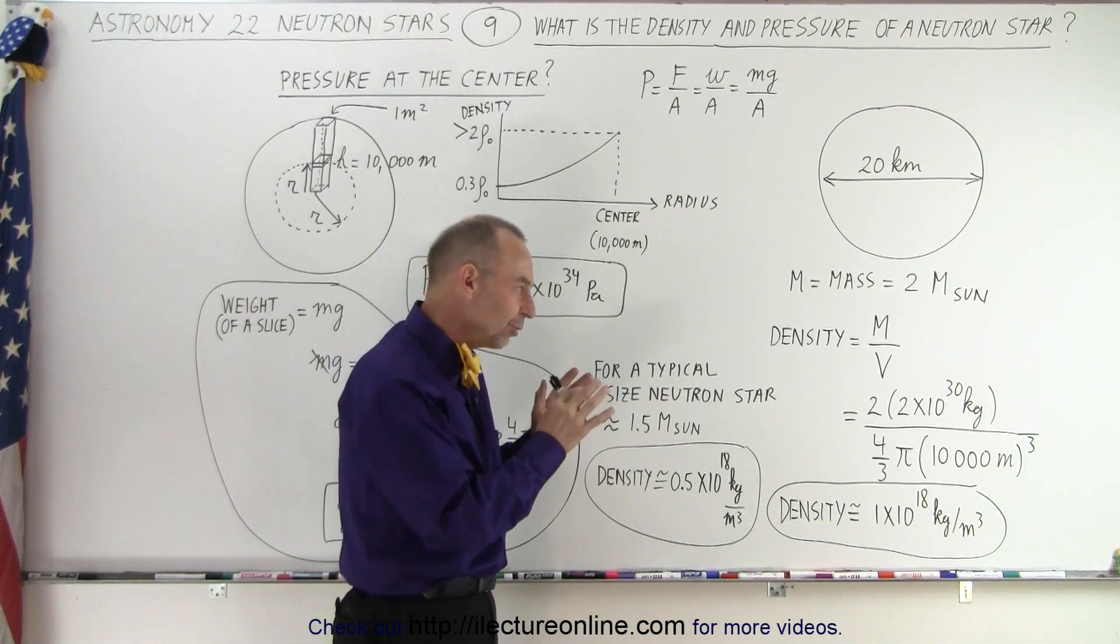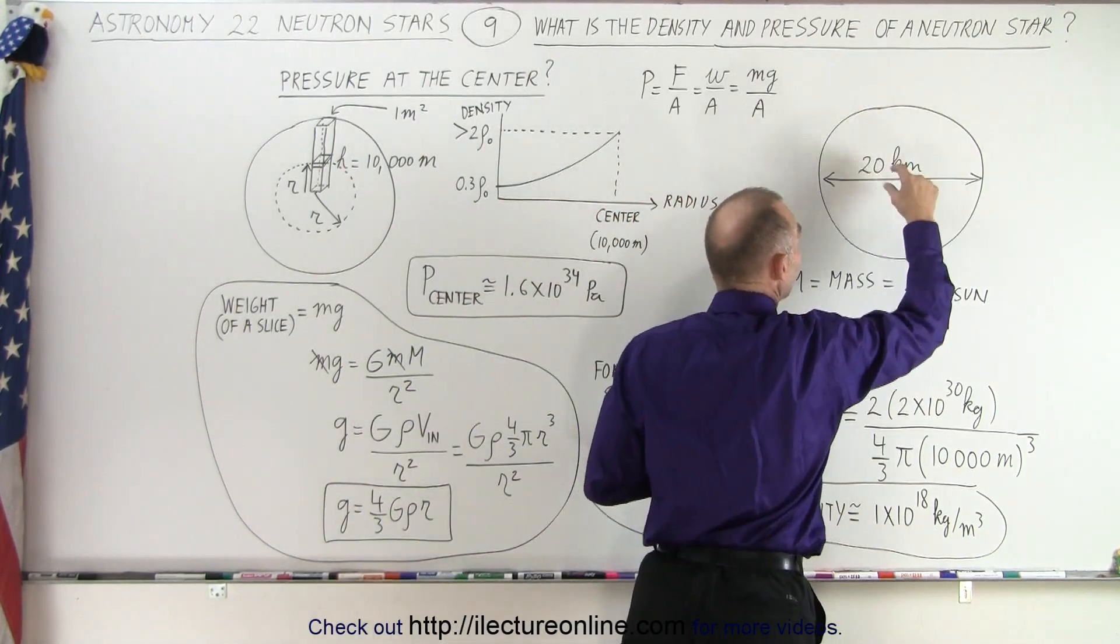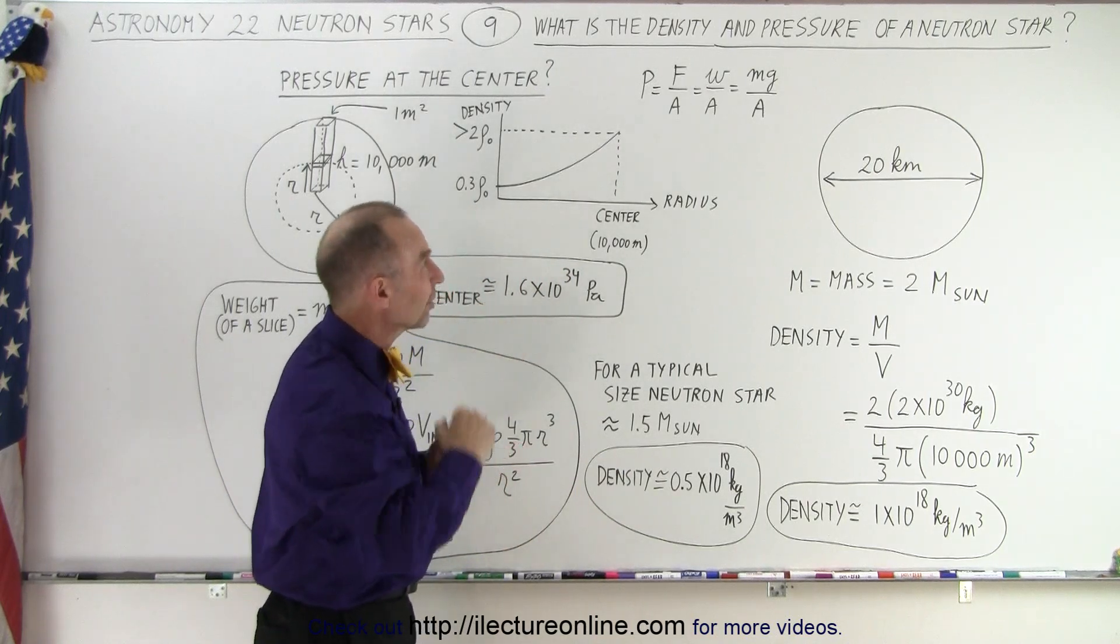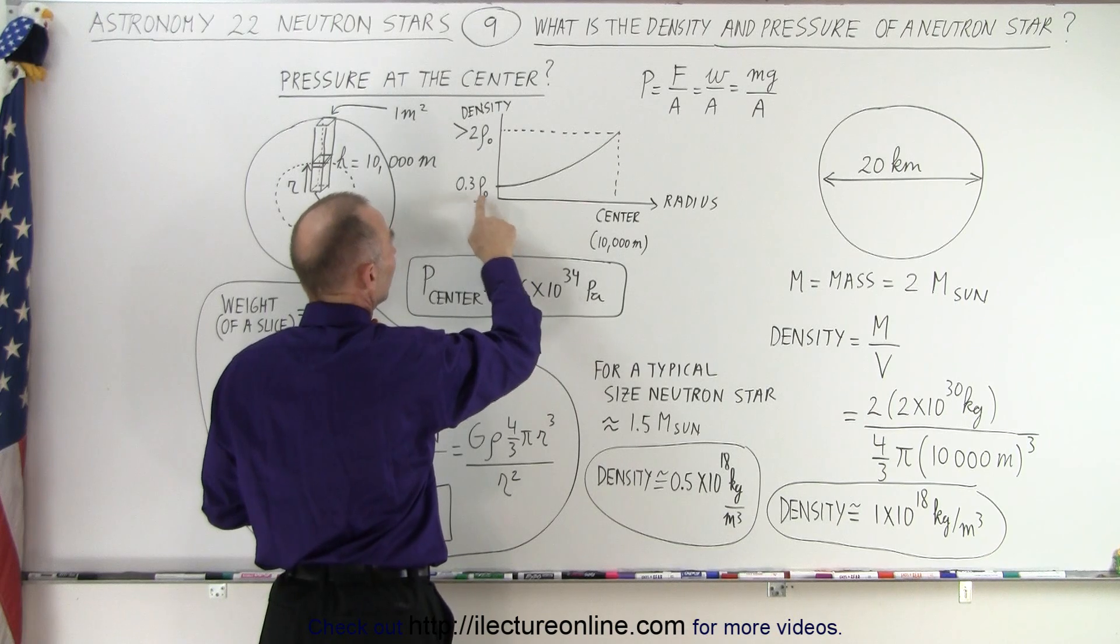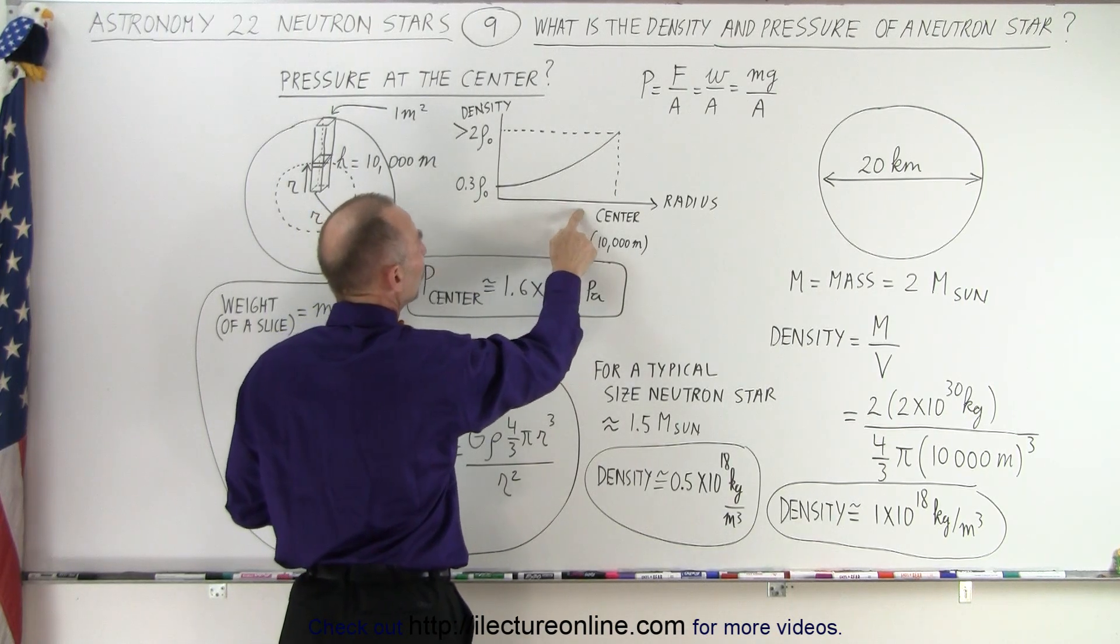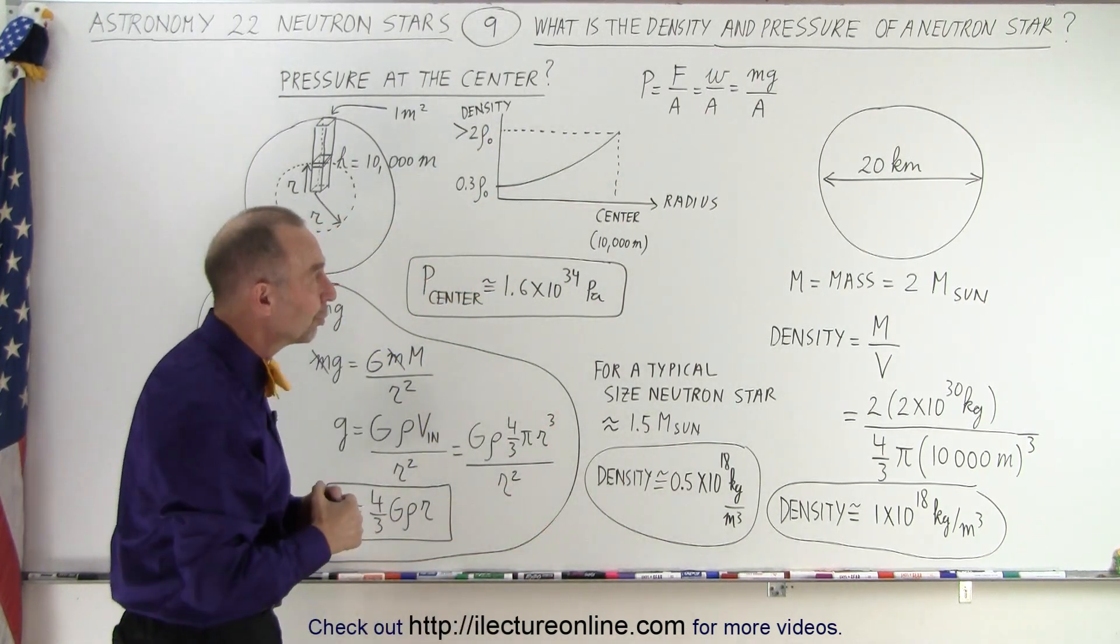But of course, it's not quite as simple as that, because the neutron star is a lot less dense near the surface and much more dense near the center. And so there's this gradient on the density. Notice that at the surface, the density is about 0.3 times the average density, and towards the center, it is greater than twice the average density of the neutron star.